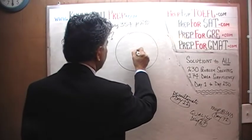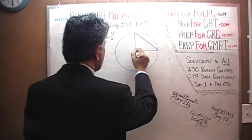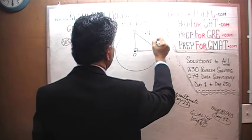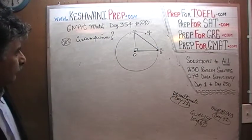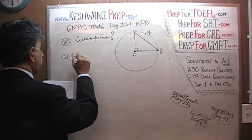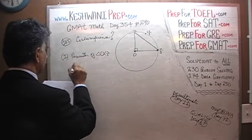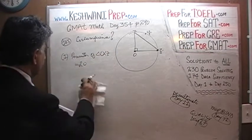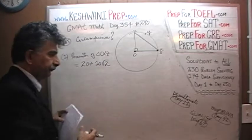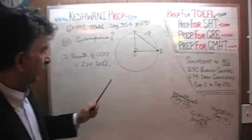What is the circumference of the circle given to us in the picture? We are told this is the center. We have a triangle. We are told that this makes a 90 degree angle. This is O, this is X, this is Y, and this is Z. In the first statement, they tell us that the perimeter of triangle OXZ is equal to 20 plus 10 times root 2.